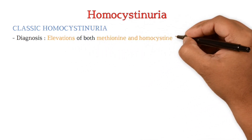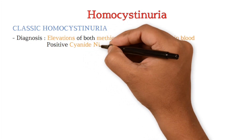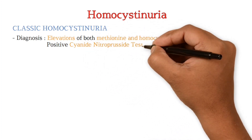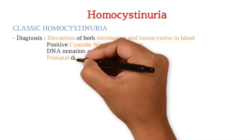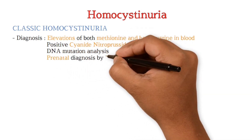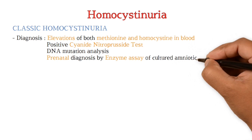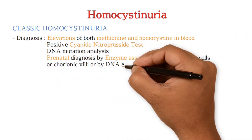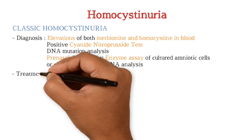For diagnosis, you will find elevated levels of both methionine and homocysteine in blood. The positive cyanide nitroprusside test is a screening test for homocystinuria. DNA mutation analysis can be done. Prenatal diagnosis is performed by enzyme assay of cultured amniotic cells or chorionic villi, or by DNA analysis.